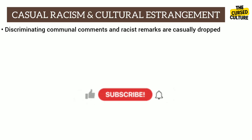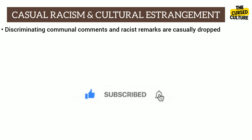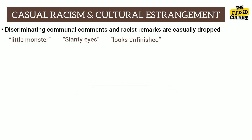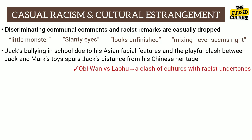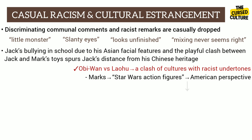Discriminating communal comments and racist remarks are casually dropped throughout the narrative. Living in a White Picket, Connecticut community, the neighbor ladies remark Jack as a little monster having slanty eyes, looks unfinished, and that cultural and matrimonial mixing never seems right. Jack's bullying in school due to his Asian facial features and the playful clash between Jack and Mark's toys spurs Jack's distance from his Chinese heritage. The playful clash between Obi-Wan and Lao Hu is symbolically a clash of cultures, ultimately perpetuated by racist undertones. Mark's Star Wars action figures, representing the American perspective, deems Jack's paper menagerie as trash and garbage.